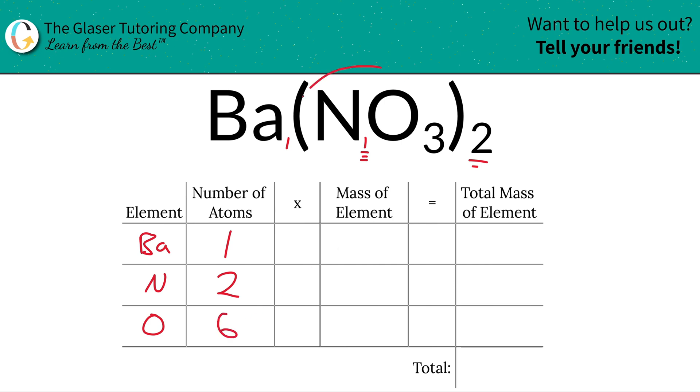You can simply just take this three and multiply it by a two to find a total of six. And that should hopefully make sense. Inside of each single nitrate there's three oxygens, but you have two nitrates, so there should be six oxygens in total.